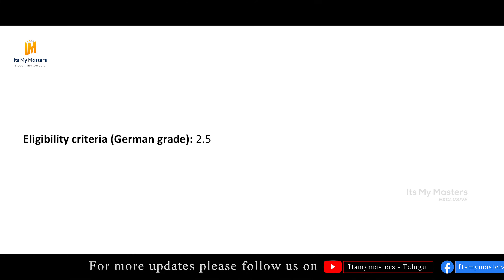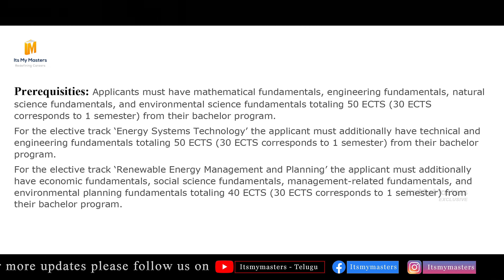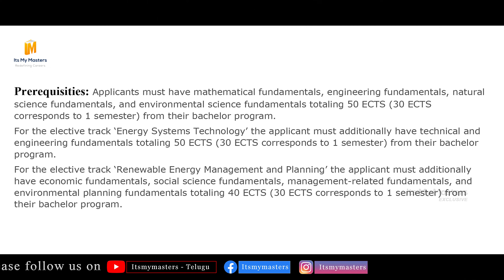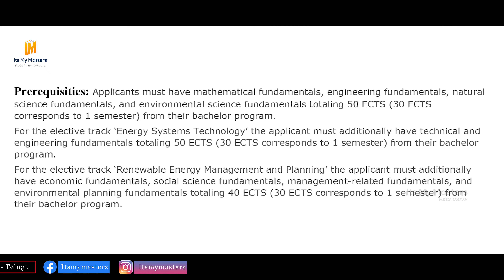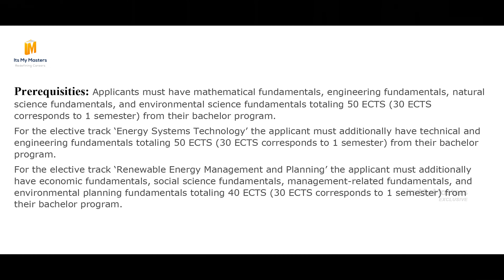The eligibility criteria requires a minimum German grade of 2.5. Applicants must have mathematical fundamentals, engineering fundamentals, natural science fundamentals, and environmental science fundamentals totaling 50 ECTS. For the elective track Energy Systems Technology, applicants must additionally have technical and engineering fundamentals totaling 50 ECTS from their bachelor's program. For Renewable Energy Management and Planning, applicants must additionally have economic fundamentals, social science fundamentals, management-related fundamentals, and environmental planning fundamentals totaling 40 ECTS from their bachelor's program.